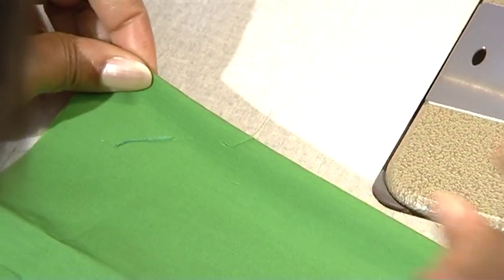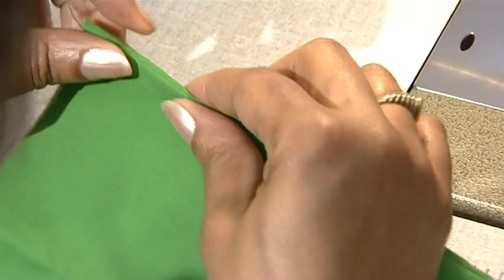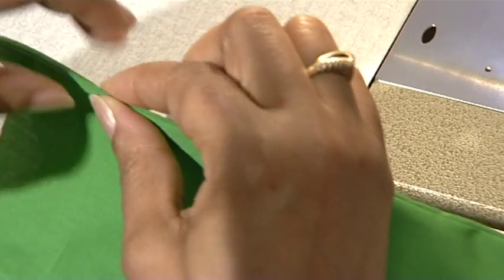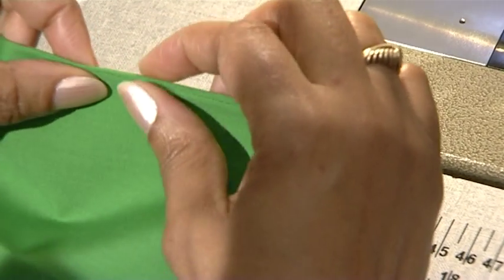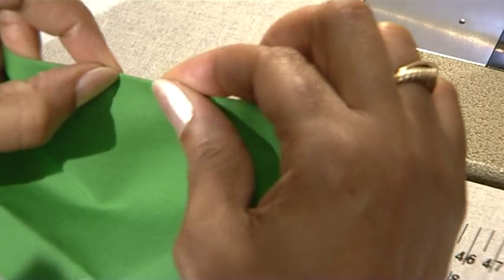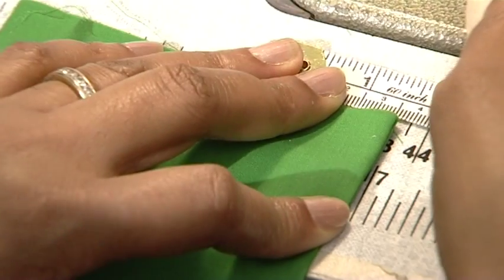Press along the seam edge of the fabric and do this as accurately as possible. We will now make a nine millimeter seam allowance.